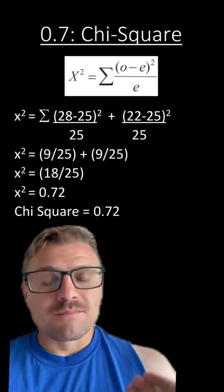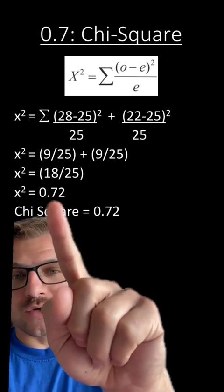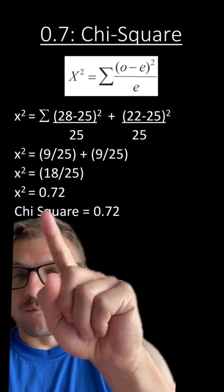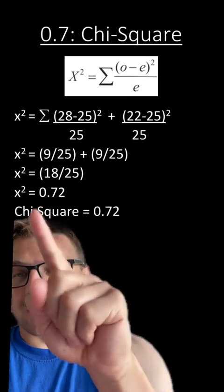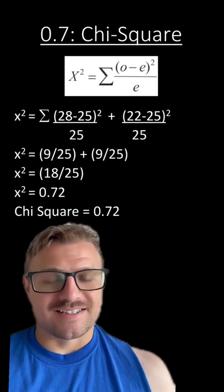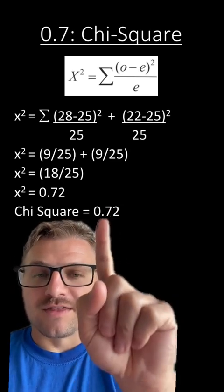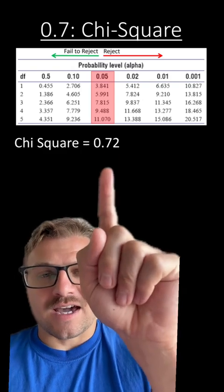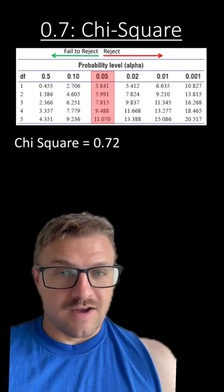Again, one of the most common mistakes I see with students calculating this is they think they have to take the square root of this side and this side. Remember, x-squared is your chi-square. So our chi-square value is 0.72. Our second biggest mistake I see students making is that they think this is the p-value. This is not the p-value. This is the chi-square value. We're going to use this to figure out what the p-value is.